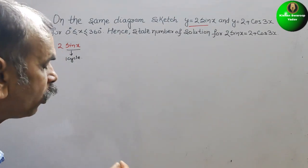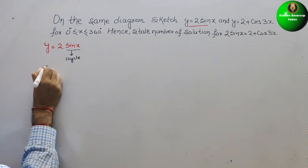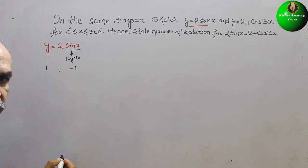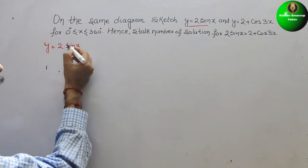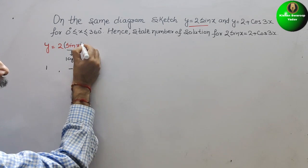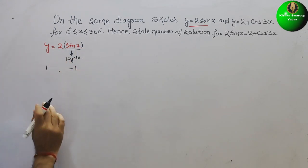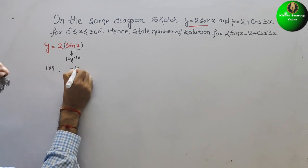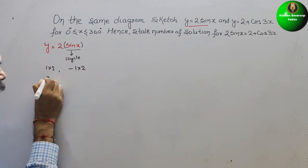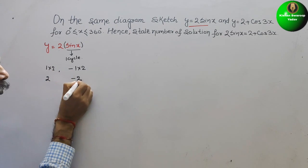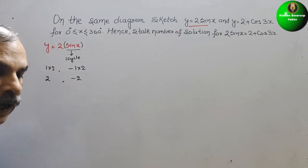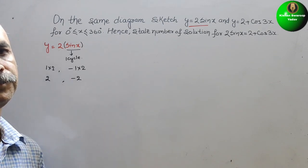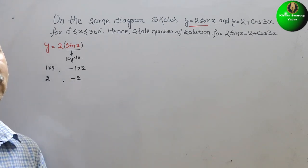Since we have 2 sin x, we multiply the amplitude by 2. That means 1 × 2 = 2 and −1 × 2 = −2. So the amplitude of this wave should move from +2 to −2.